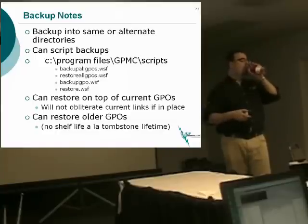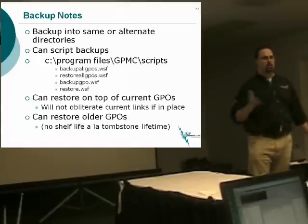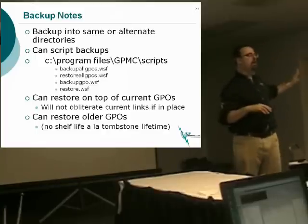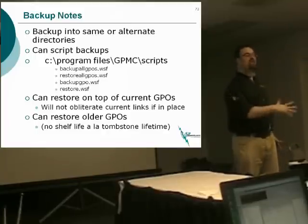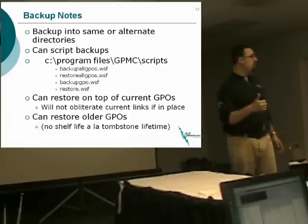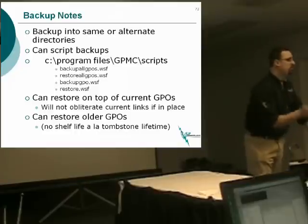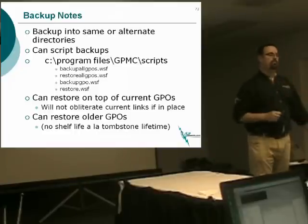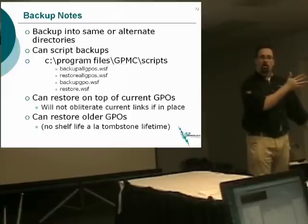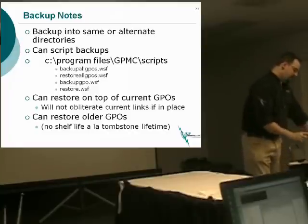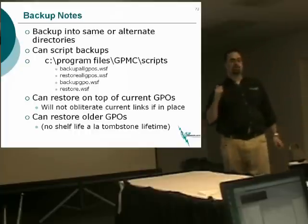What's especially interesting about backup is that you can keep backing up into the same or alternate directories. For instance, if I had a directory called 'every GPO I'm ever going to back up in my entire life,' I could back up every single day and never overwrite a single GPO. My suggestion is that you have 52 directories, one for each week of the year, and back up Monday, Wednesday, and Friday into one directory — three backups every week into the same folder.